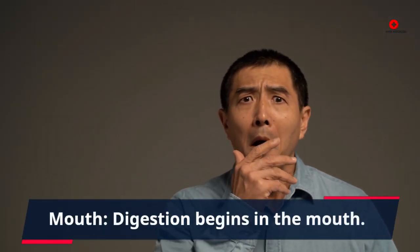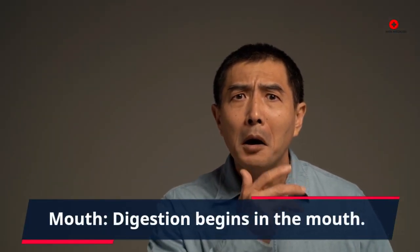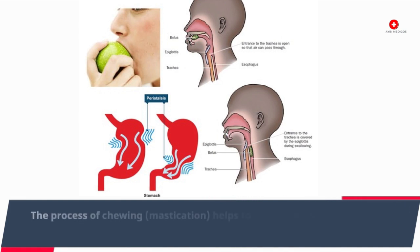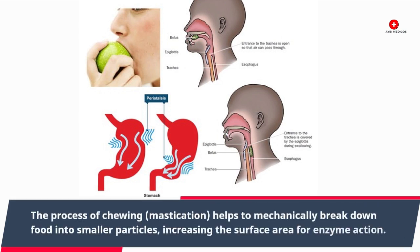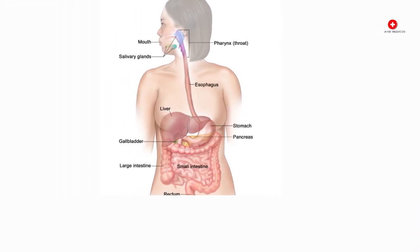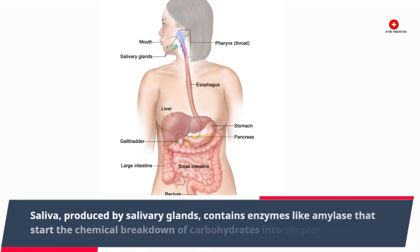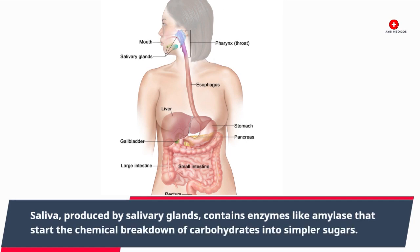Mouth. Digestion begins in the mouth. The process of chewing, or mastication, helps to mechanically break down food into smaller particles, increasing the surface area for enzyme action. Saliva, produced by salivary glands, contains enzymes like amylase that start the chemical breakdown of carbohydrates into simpler sugars.